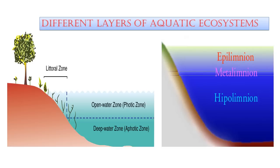On the left you can see the zonation in terms of the depth to which light penetrates — known as photic or aphotic zone depending on whether sunlight reaches or does not reach. On the right side you can see the stratification in terms of temperature. The deeper you go, the lower the sunlight penetration and the colder the water. The three layers are epilimnion, metalimnion and hypolimnion, with a thermocline between them.